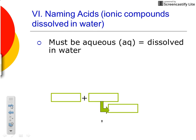They must be aqueous, so we use the symbol aq, and all that means is they are dissolved in water. Think of aqua - aqua water. aq means something has been dissolved in water, so acids are always understood to be aqueous.